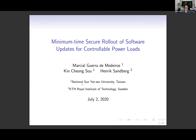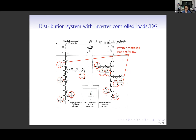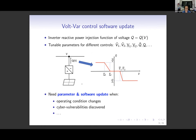The title is: 'The Minimum Time Secure Rollout of Software Updates for Controllable Power Loans.' In our work, we consider power distribution systems with potentially many inverter-connected loads and DGs. Smart inverters maintain connection point voltage by adjusting their injections, and the Q and V adjustments typically follow a volt-var control law. The control software may need to be updated due to operating condition changes, discovered cyber threats, and so on.